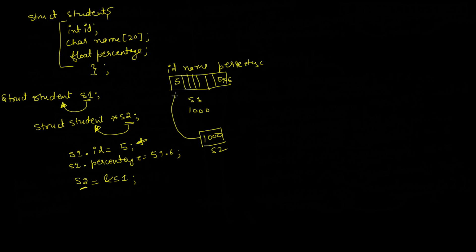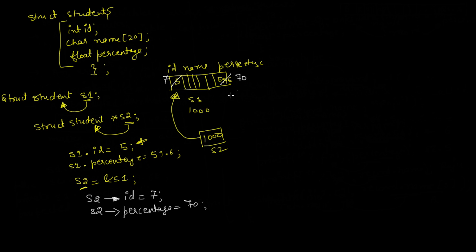From this s2 pointer, if I want to access the id part, we have to use an arrow operator: s2 arrow id is equal to 7. That means I am accessing the id part from s2 and storing the value 7. Similarly, s2 arrow percentage is equal to 70, so 70 will be stored there.